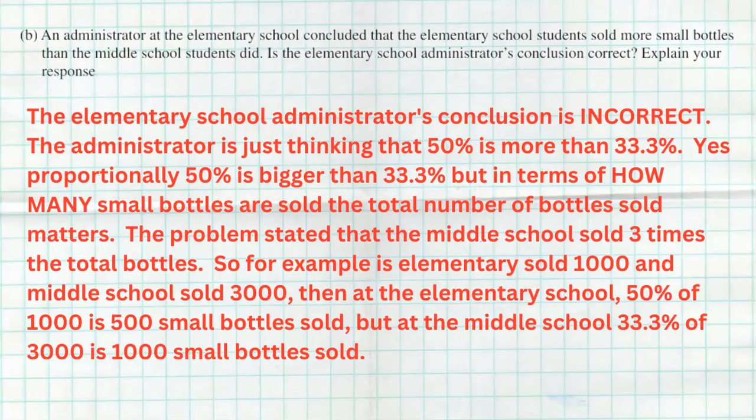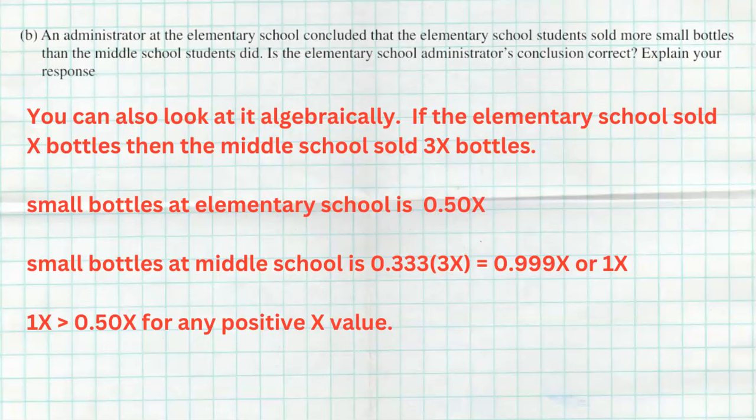You can even think about it algebraically. So if you think about algebraically, we just said that elementary sold x bottles, because we actually we don't know, but therefore the middle school sold 3x bottles. Now at the middle school we would take 50% of that x to get our total for the small bottles. At the middle school we would take the 33.3% of 3x, which would essentially be 0.999x, or if you actually keep all those decimals it would be 1x. 0.33 times 3, one third times 3 is 1, 1x. So for any positive x value, for any actual amount of total bottles sold, 1x is going to be far greater than 0.5x, signifying that the school administrator had it wrong.